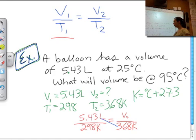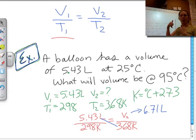This is a pretty simple cross multiplication, so I'm seeing Liz over there plugging in the numbers at 5.43 times 368 divided by 298. Do you think the new volume is going to be higher or lower? Higher. And is it? It is 6.71 liters. So that's what Charles' Law tells us, is that if volume increases, temperature increases. If temperature increases, volume increases.